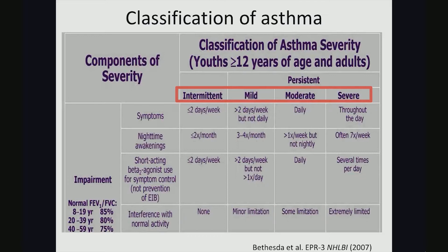In intermittent asthma, patients have symptoms less than or equal to two days per week, nighttime awakenings less than or equal to two times a month, and short-acting beta agonist use less than or equal to two days a week, with no interference with normal activity. In mild asthma, symptoms occur greater than two days a week but not daily, nighttime awakenings three to four times a month, SABA use greater than two days per week but not more than once a day, and there are minor limitations on normal activity.